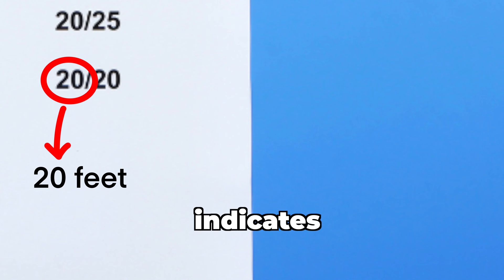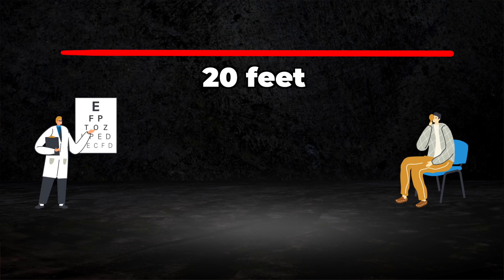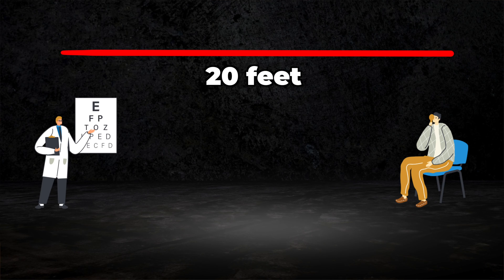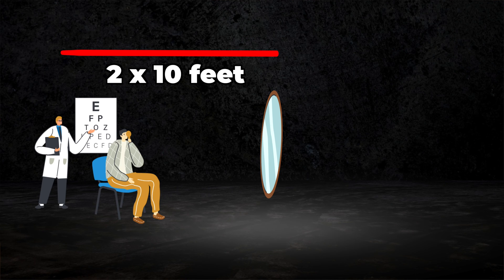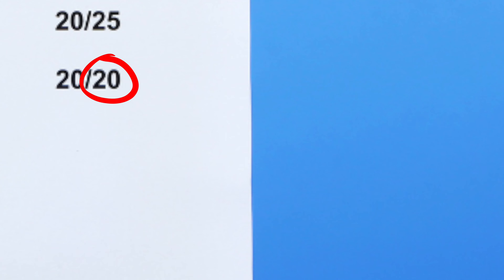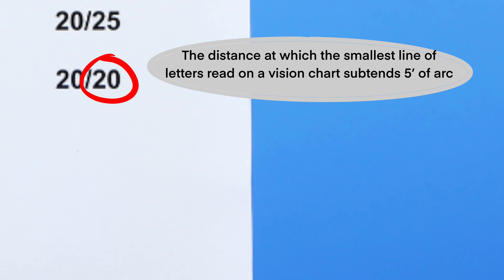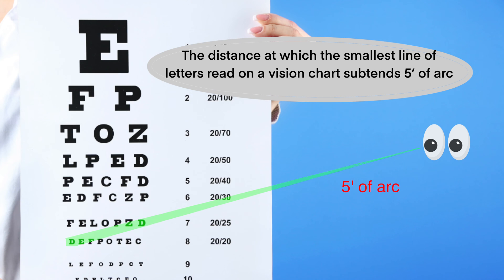The first number indicates the testing distance, so you'll find most optometry practices are either 20 feet or 10 feet with the help of a mirror. And the second number indicates the distance at which the smallest line of letters read on a vision chart subtends 5 minutes of arc.